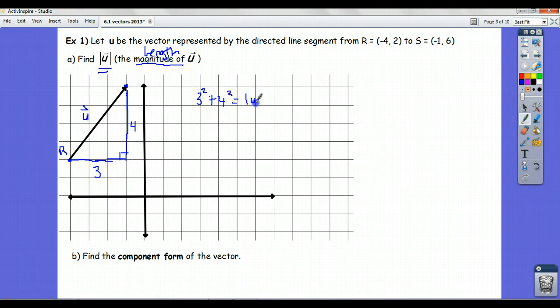So now we see this base of the triangle as a side of 3 and a height of 4. 3 squared plus 4 squared equals, to be technically correct, |u| squared. That's 9 plus 16 equals |u| squared.